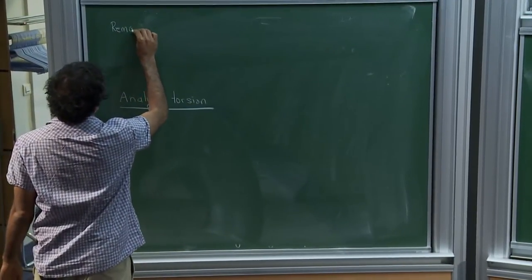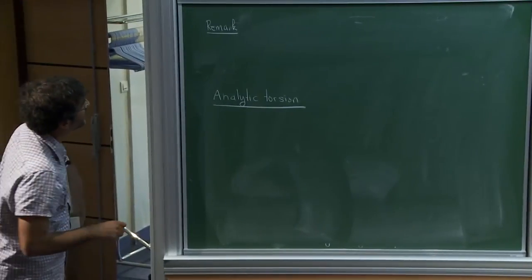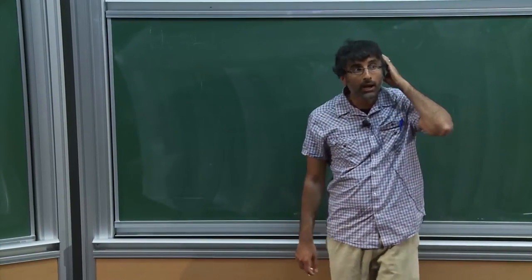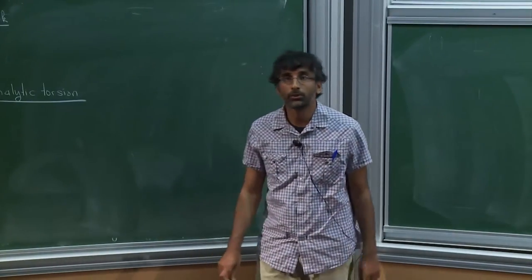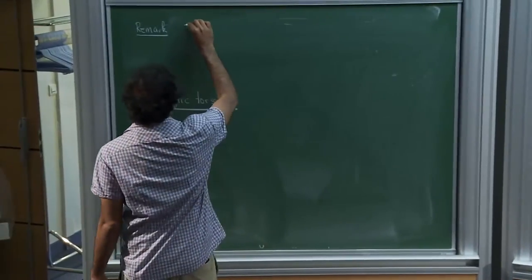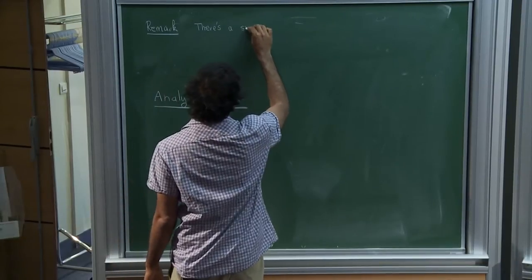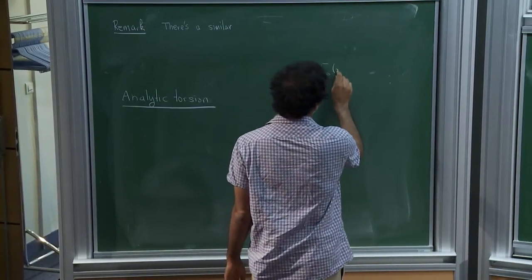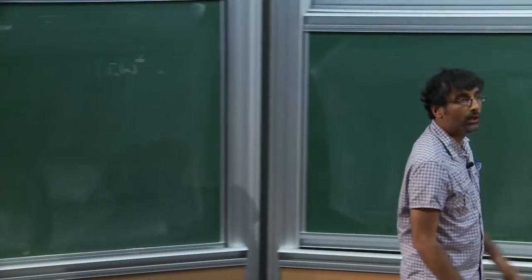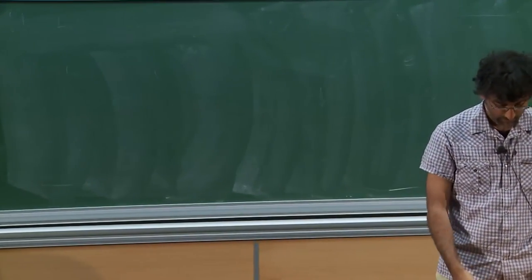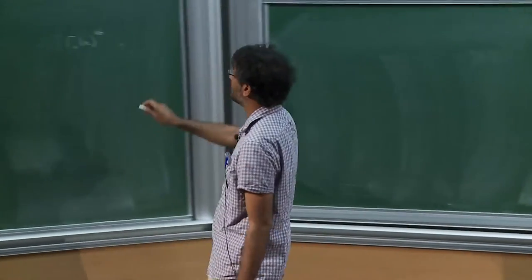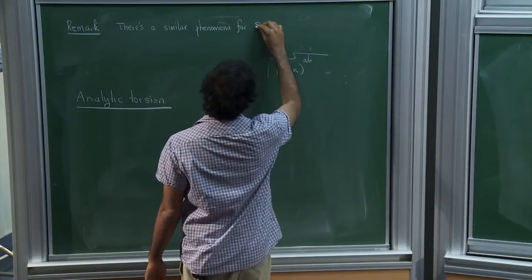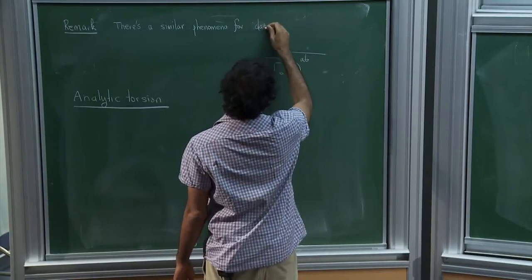A little remark before that, which was in response to a question that Paul Nelson asked last time. I've been talking about imaginary quadratic fields, but there is a kind of parallel phenomenon which you can see for just classical modular forms. The sort of thing we've been doing is you take this group, take its abelianization, and what you find is it has typically a small free part but can have very large torsion part. There's a similar phenomenon for SL₂ over classical modular forms.